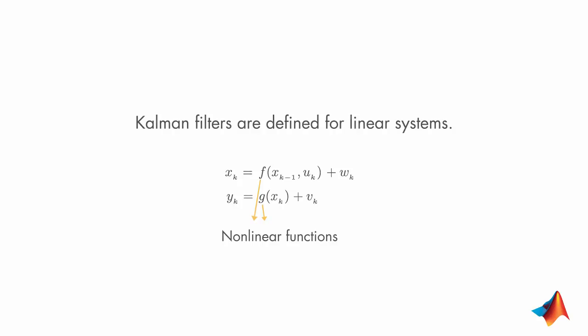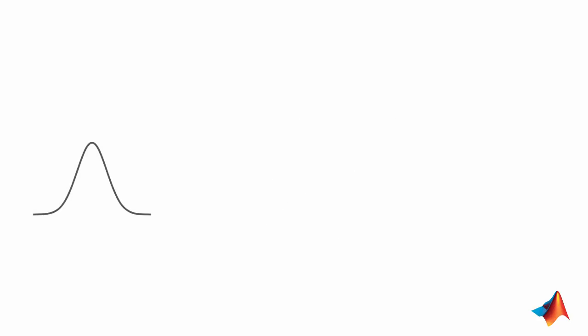Here's an example that shows the problem with using a Kalman filter for state estimation of a nonlinear system. The Kalman filter assumes a Gaussian distribution. If the state transition function is linear, then after undergoing the linear transformation, the distribution maintains its Gaussian property. Although it's not shown here, the same is true for the measurement function g.